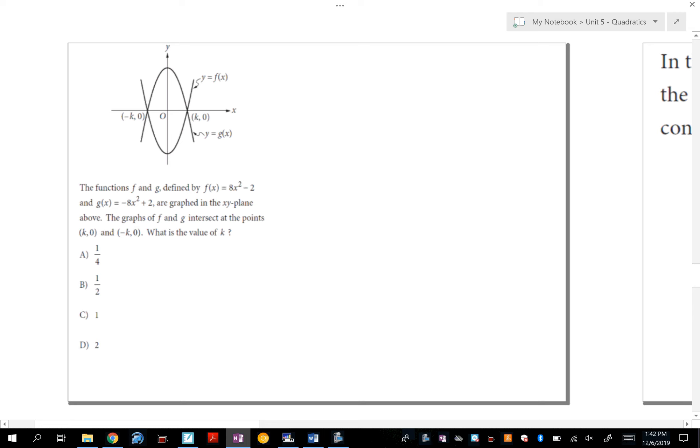We have two functions. And it gave us their parabolas here. So here's the one that has the positive 8. Here's the one that has the negative 8. And it says they both intersect at the x-axis. So we're trying to find k. What do you know about the x-intercepts? How do I find the x-intercepts of this? You set it equal to 0. That's the first thing. So I chose this one. Could you have chosen the one that says negative 8? Absolutely. It doesn't matter.